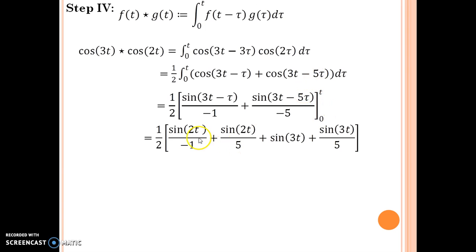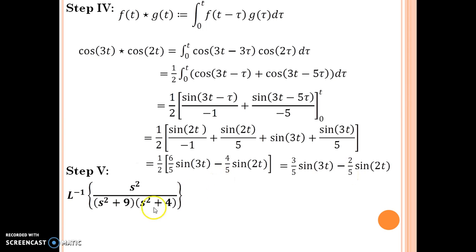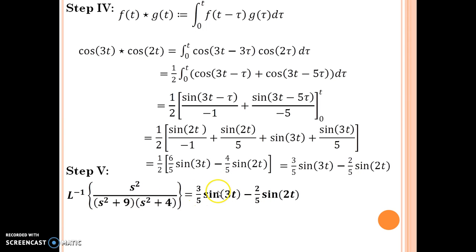On plugging in the limits from 0 to t, we get: sin(2t) divided by minus 1, plus sin(2t) divided by 5, plus sin(3t) plus sin(3t) divided by 5. The factor of one half is carried through and we simplify. On simplification, the final answer is 3 over 5 times sin(3t) minus 2 over 5 times sin(2t). So the final answer is (3/5) sin 3t minus (2/5) sin 2t.